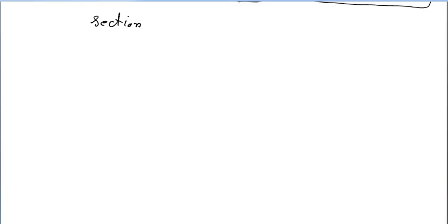The next topic of three-dimensional geometry is the section formula. We have discussed this formula in lower classes, but I will give one additional case of the section formula which is very important. Suppose you have two points A and B and you join them.